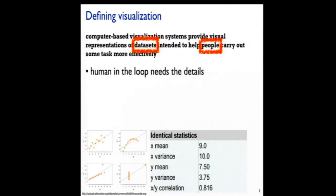Let me start with the definition. When I say Viz, what do I mean? Specifically, computer-based visualization systems provide visual representations of data sets intended to help people carry out some task more effectively. One implication is that there's data and there's people, and in particular there is some human in the loop that needs the details — as opposed to methods that are completely automatic, where we are not interested in a human being in the loop.